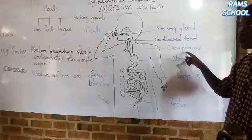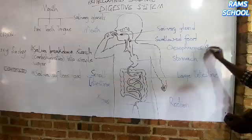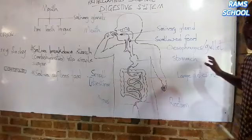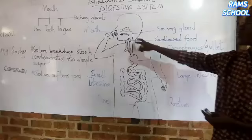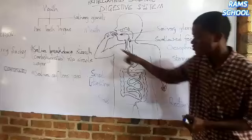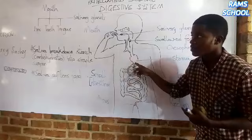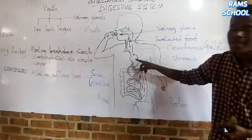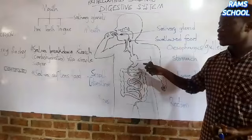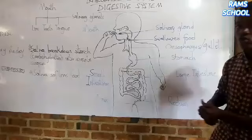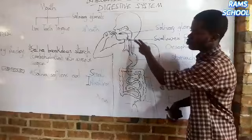From the mouth, we move on to the esophagus. Another name given to the esophagus is the gullet. The esophagus serves as a linkage between the mouth and the stomach. Food passes from the mouth to the stomach through the esophagus. Before food can enter the stomach, it needs to pass through the esophagus.